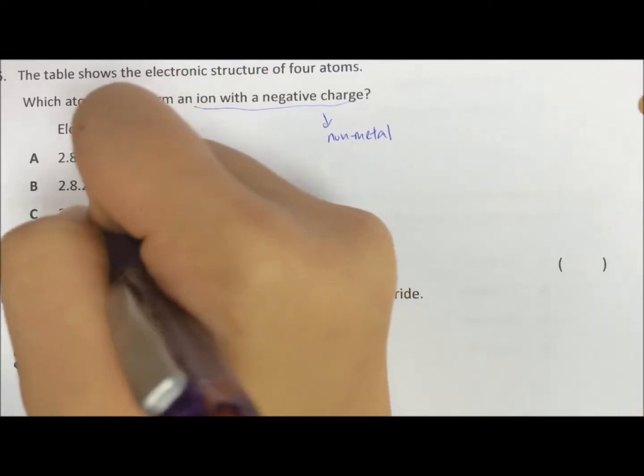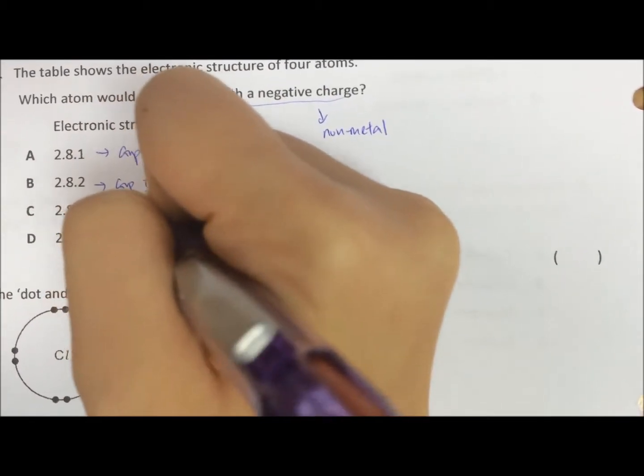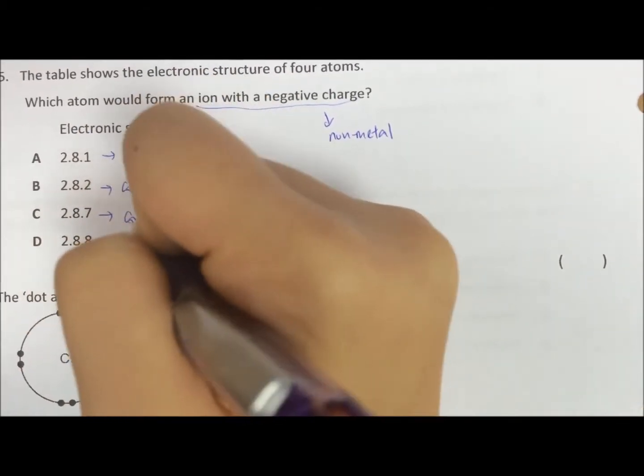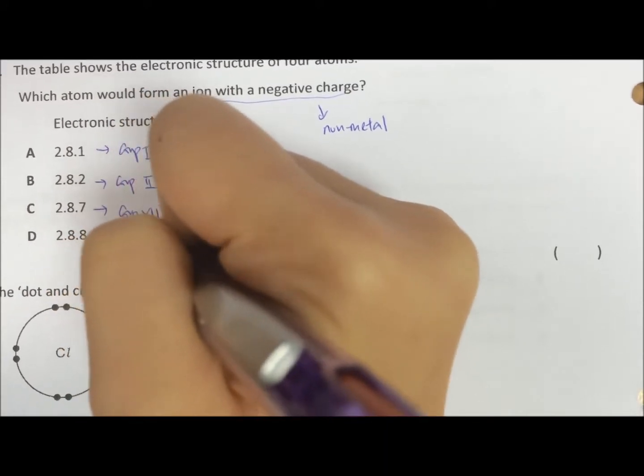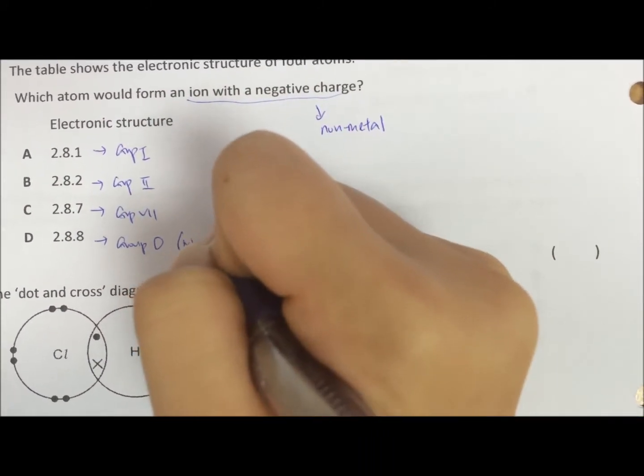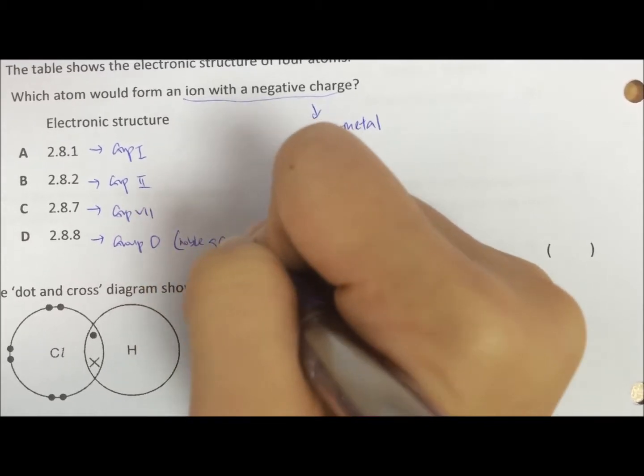Based on the electronic structure, you can also guess which group it is in. So if it ends with one valence electron, it is in group 1. So we have group 1, group 2, group 7 and group 0.